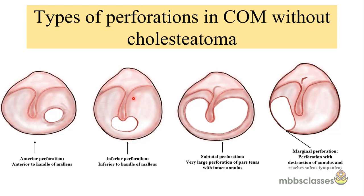Perforations are usually classified as per the location. Recapitulating the anatomy of the tympanic membrane: the anterior malleolar fold, the posterior malleolar fold, the part below is the pars tensa and the part above is the pars flaccida. In chronic otitis media without cholesteatoma, the perforation is always present in the pars tensa. The location could be anterior or posterior in relation to the handle of malleus. A perforation anterior to the handle of malleus is an anterior perforation, and one behind the handle is a posterior perforation.